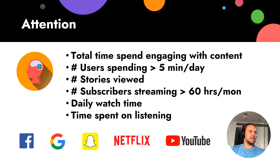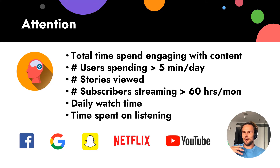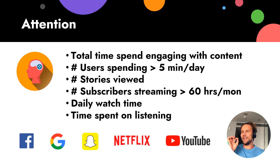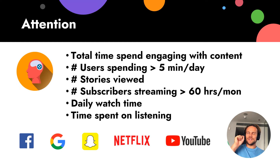For Google, they calculate users who spend more than five minutes per day — not those who use Google just one time per day, but people who use it at least five minutes per day. For Netflix, it's story views — if more people watch stories, more people are using and sharing. And Netflix famously invests a lot to fight with people sleeping: while you're sleeping, you're not watching Netflix.